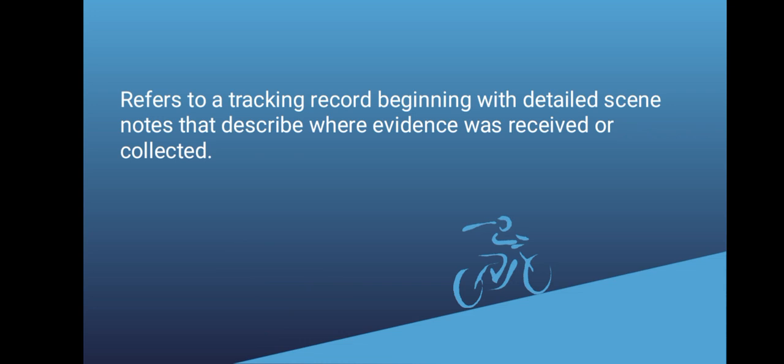So what is a chain of custody? A chain of custody is a tracking record beginning with detailed scene notes that describe where evidence was received or collected. It shows the process of the evidence from when it was collected till when it's presented in a court of law. In a crime scene, the collecting officer who collects that specific evidence has to sign, and any other person who handles that evidence — maybe a toxicologist or other forensic scientists or analysts — anyone who handles that evidence has to sign until it's produced in court by the prosecuting lawyer.